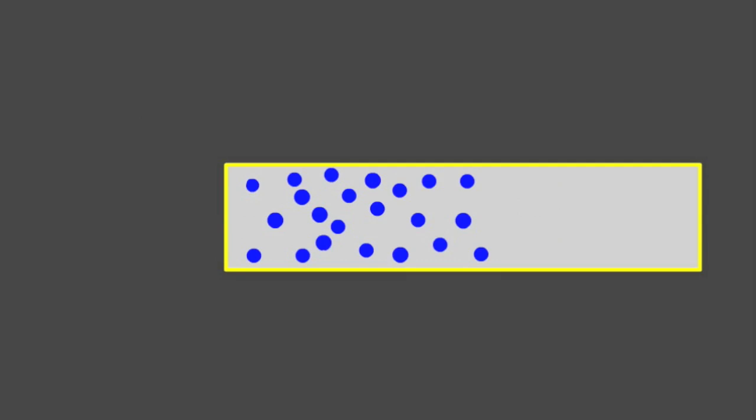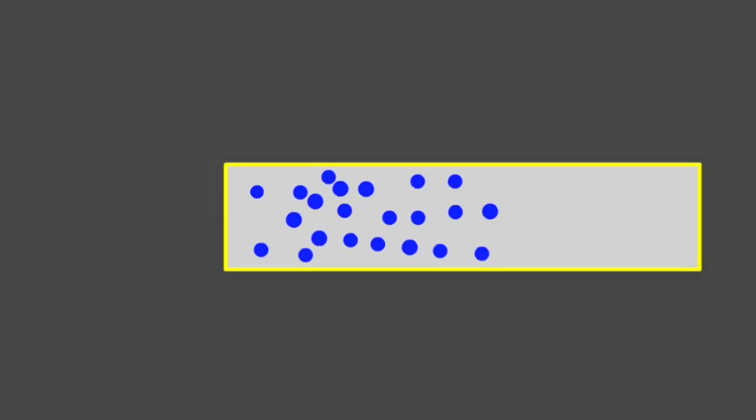If we apply a potential difference to the ends of the wires, the electrons will still vibrate randomly, but at the same time they will drift in one direction.